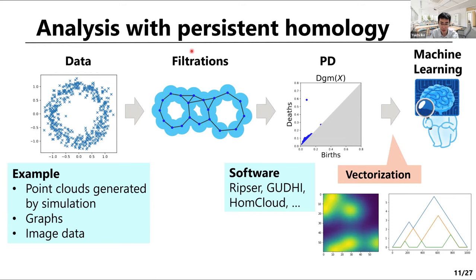So how do we use TDA in practical data analysis? This is a typical pipeline: given data such as point clouds generated by simulation, or graph or image data, we first associate some filtrations. Then we compute the persistent diagram with some software. Then we use these persistent diagrams as input to machine learning. In many cases, we vectorize persistent diagrams for input to machine learning, because the input of usual machine learning algorithms should be a vector.